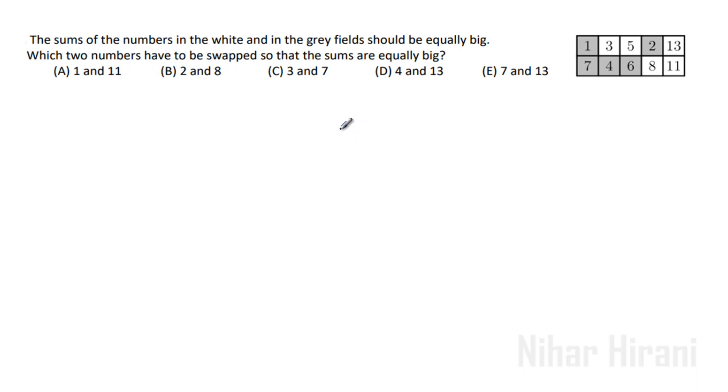Hello, let's solve this one. The sums of the numbers in the white and grey fields should be equally big. Which two numbers have to be exchanged so that the sums are equally big?